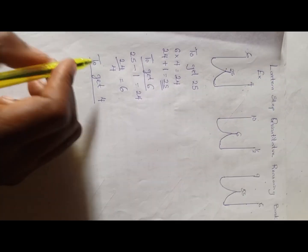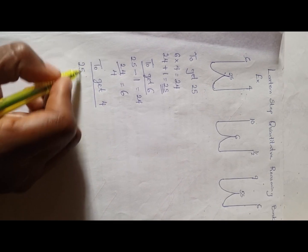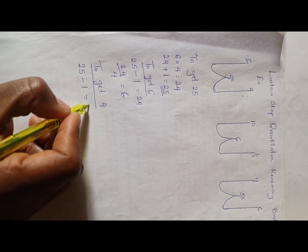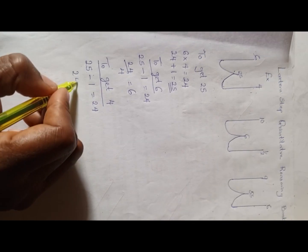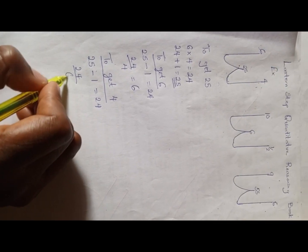To get 4, we're going to do the same: 25 minus 1 is 24, and 24 divided by 6 is 4.